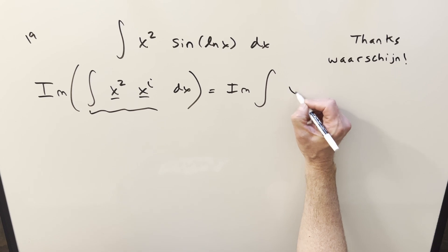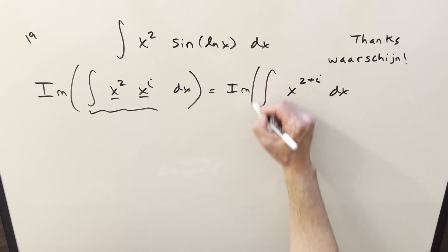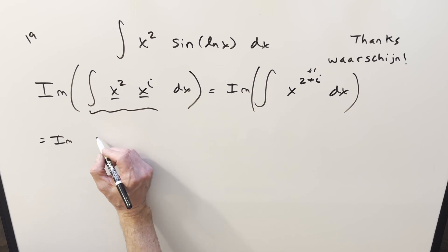It's going to be now just adding exponents x to the 2 plus i. So then doing this, we're going to end up with x to the 3 plus i over 3 plus i.